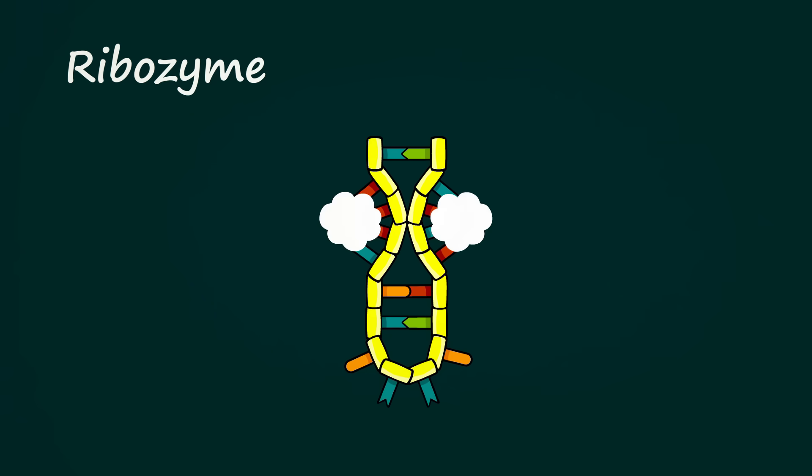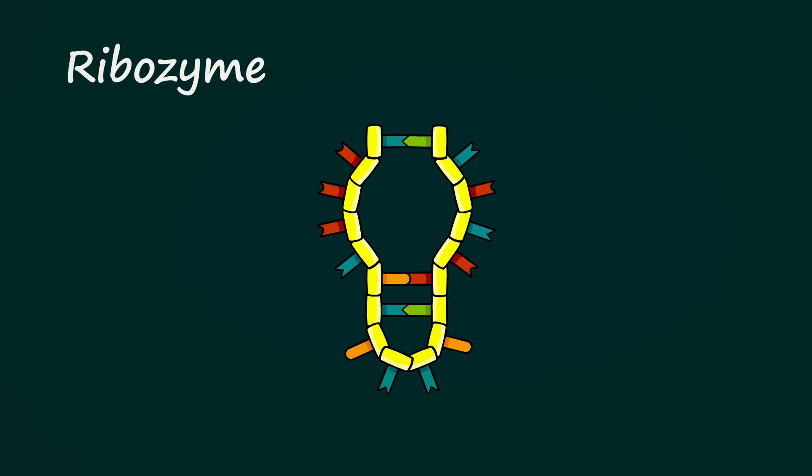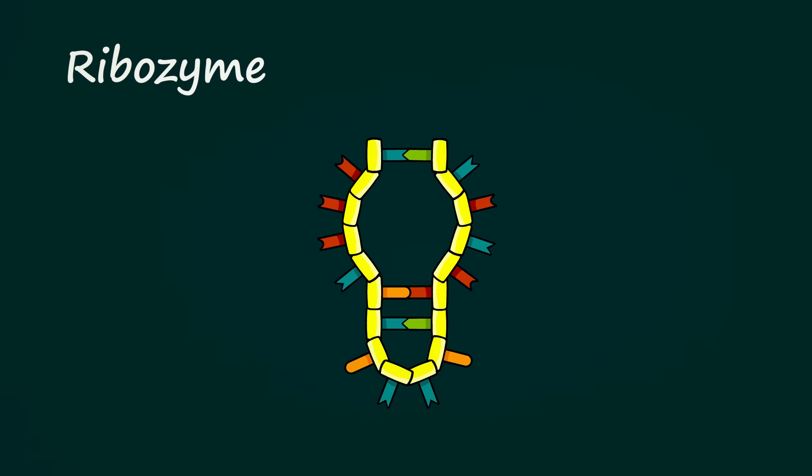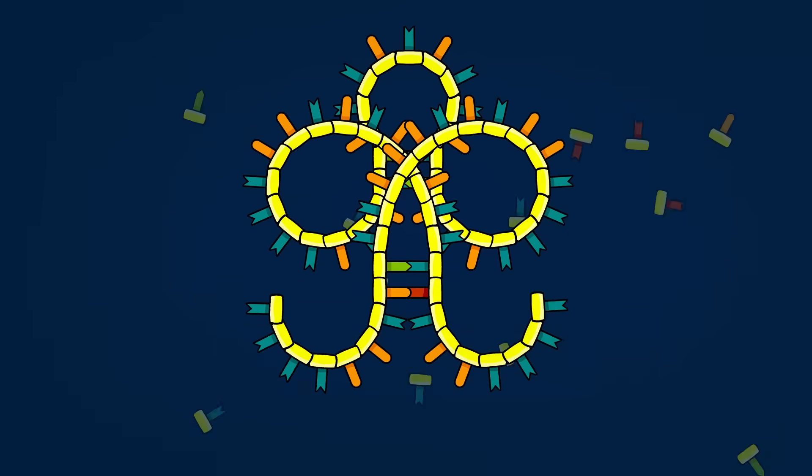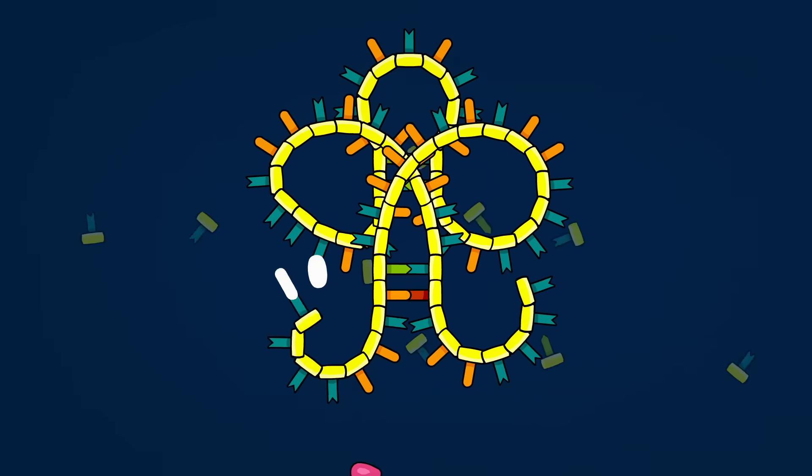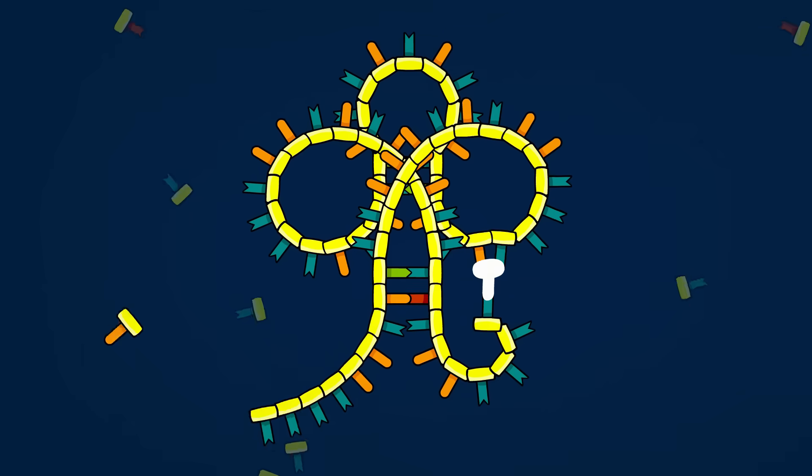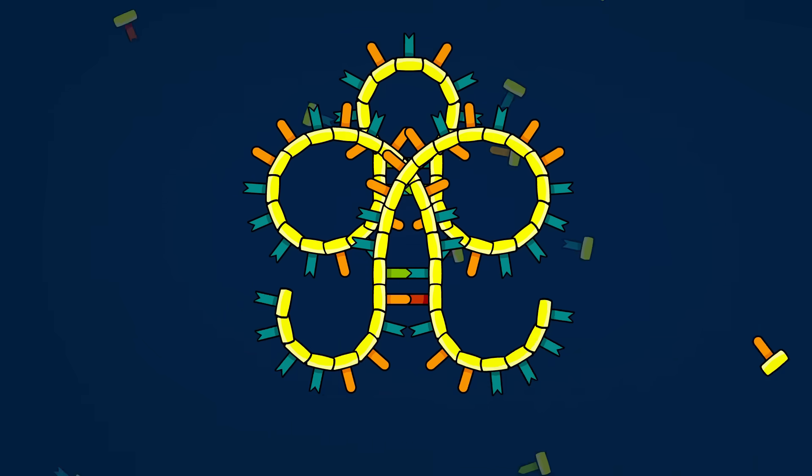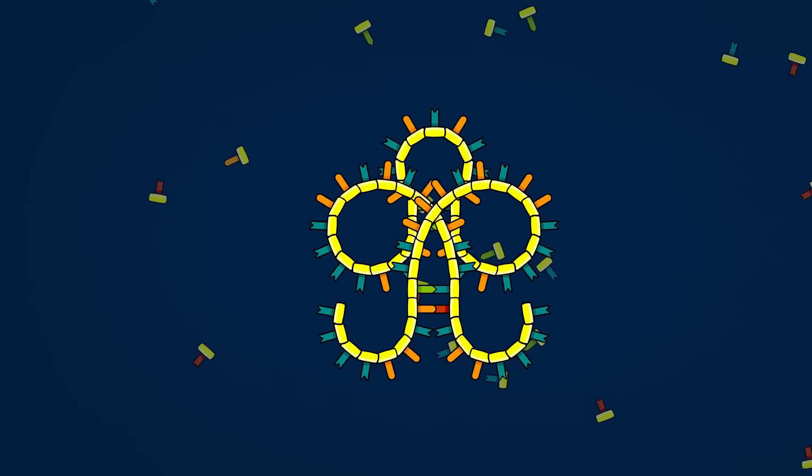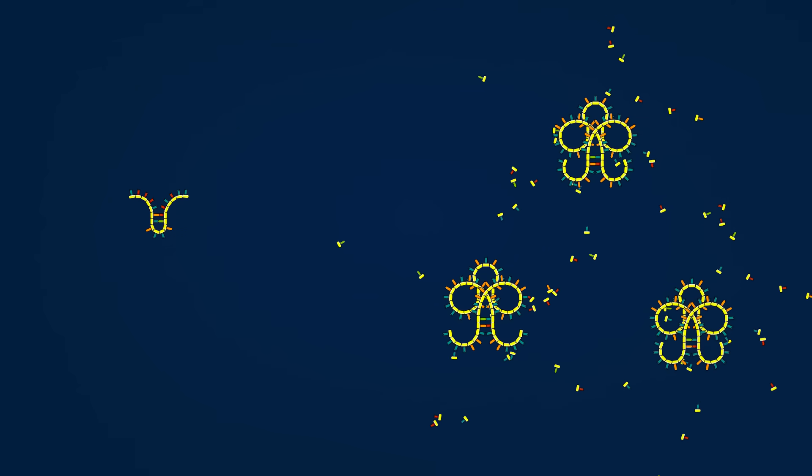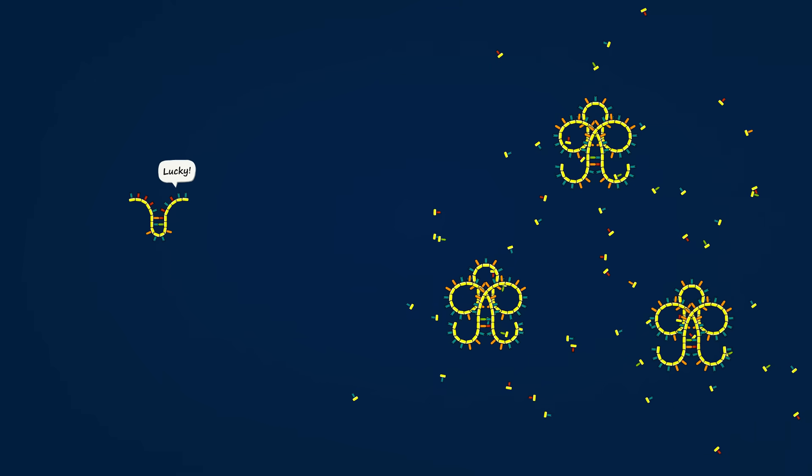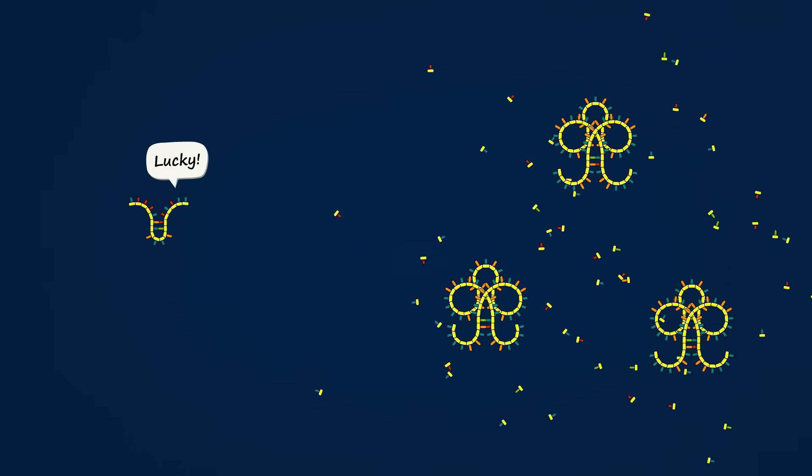When ribozymes were first discovered, scientists wondered how difficult it would be for random chains of RNA to evolve legitimate survival functions. Imagine, for example, a ribozyme that could build nucleotides out of molecules it finds in its environment. Across multiple generations, natural selection could promote and refine this ribozyme because the chain would tend to have access to more free nucleotides than its rivals, allowing it to replicate more often.